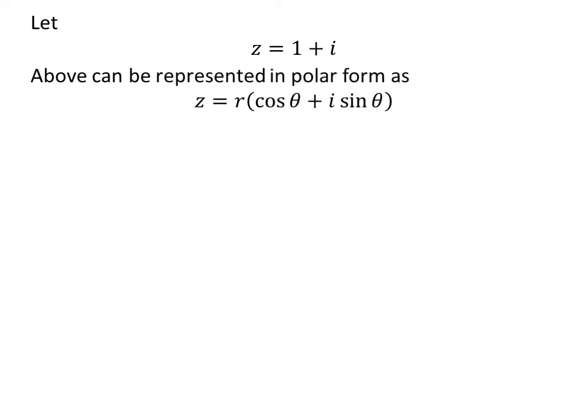The complex number Z can be represented in polar form as R times cosine of theta plus iota times sine of theta. Here, R is equal to the modulus of Z, and R times cosine of theta is equal to 1, and R times sine of theta is equal to 1.